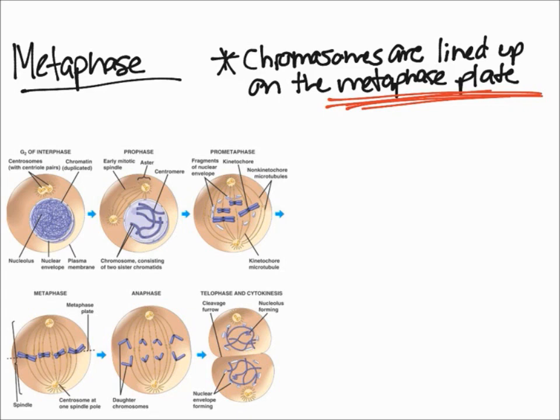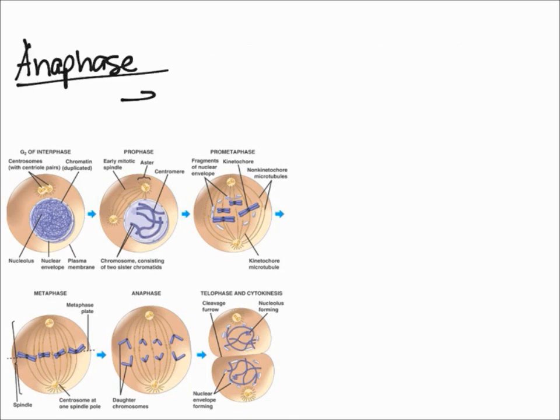Now on to the next one called anaphase. Anaphase is the shortest phase of mitosis. What happens in this phase is we have the chromosome here, and then the centromere will be in red, kinetochore in blue, and attached to spindles